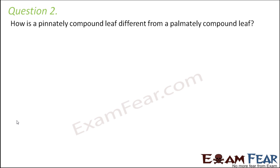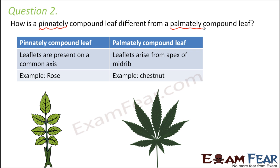Question 2: How is a pinnately compound leaf different from a palmately compound leaf? Palmate is like your palm — all five fingers arise from the same point. So in a palmately compound leaf, all leaflets arise from the apex of the midrib. Whereas in a pinnately compound leaf, leaflets are present on a common axis called the rachis. An example of palmately compound leaf is chestnut, and an example of pinnately compound leaf is rose.